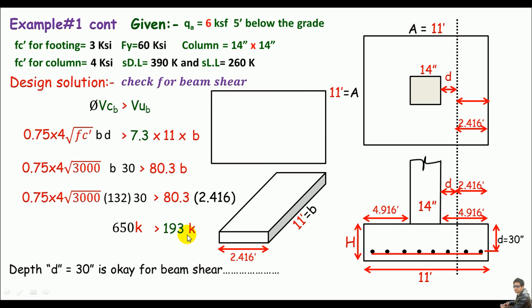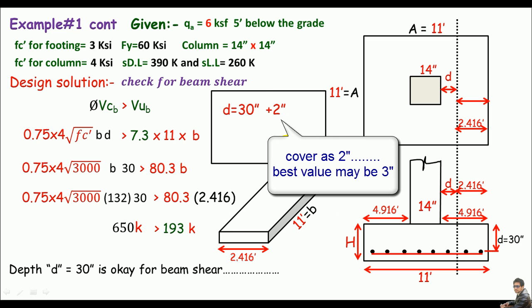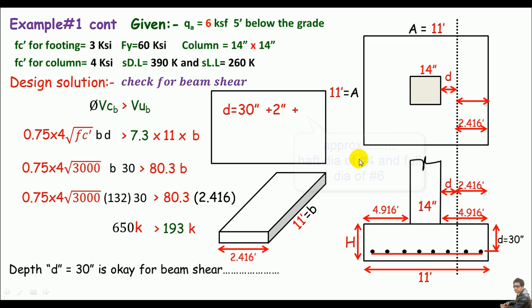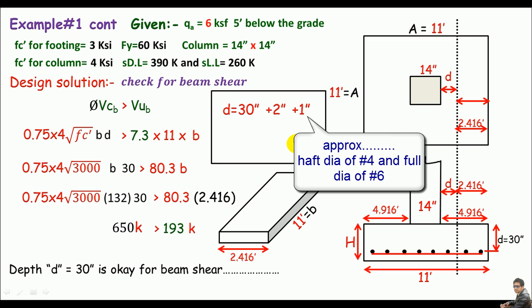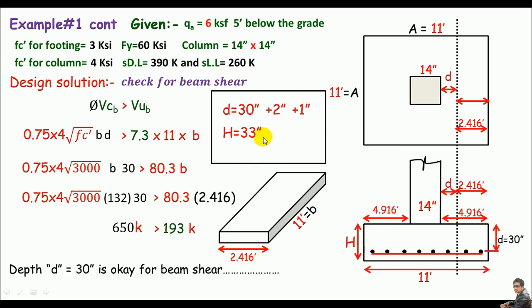The effective depth is confirmed as 30 inches. To find the overall depth, we add concrete cover of 2 inches and approximately 1 inch for bar diameter, giving about 33 inches. Rounding up, use an overall depth of 36 inches, which equals 3 feet.